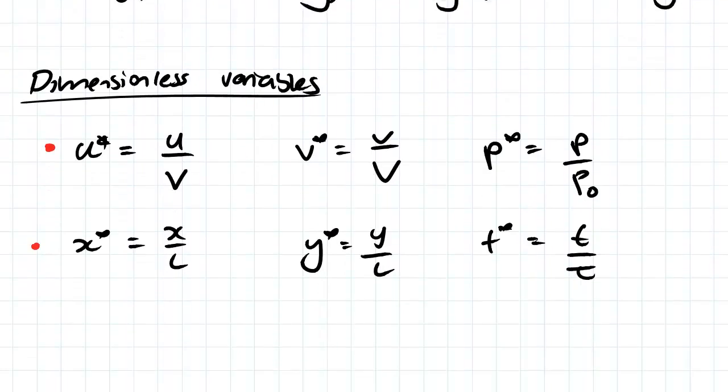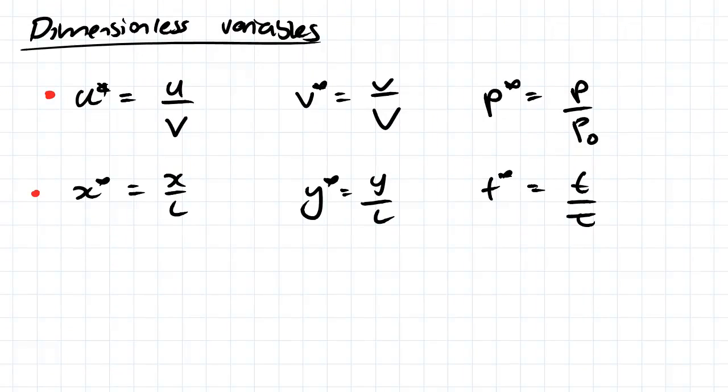So essentially what we want to do is make these variables dimensionless. For each of our velocities, we make a dimensionless velocity. For each of our lengths, we make a dimensionless length. For time, dimensionless time. And pressure, dimensionless pressure.